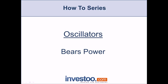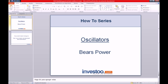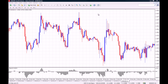Hello traders, welcome to Investoo.com's How-To Series, module on oscillators. In this lesson we're going to learn about the Bear's Power. This oscillator is a very nice indicator that will show you the strength of the current downtrend. Even though it doesn't show you actual entry or exit signals, you have to use it inside of a trading system to know how strong the downtrend you are currently riding is.